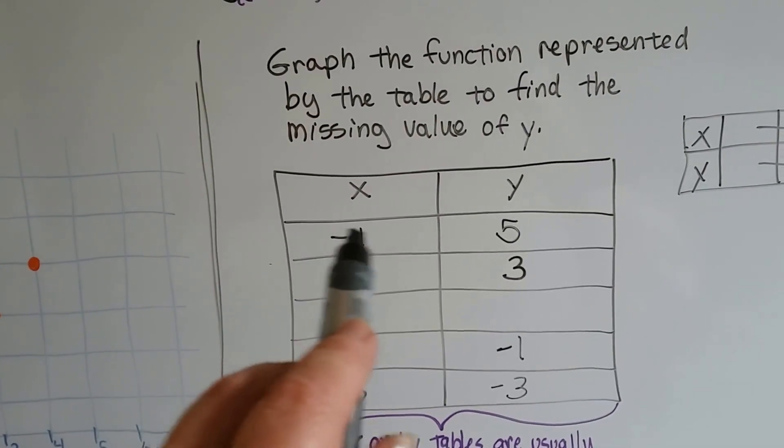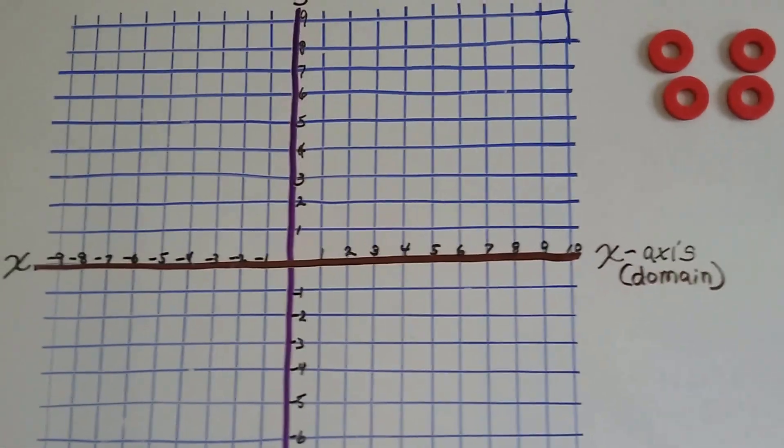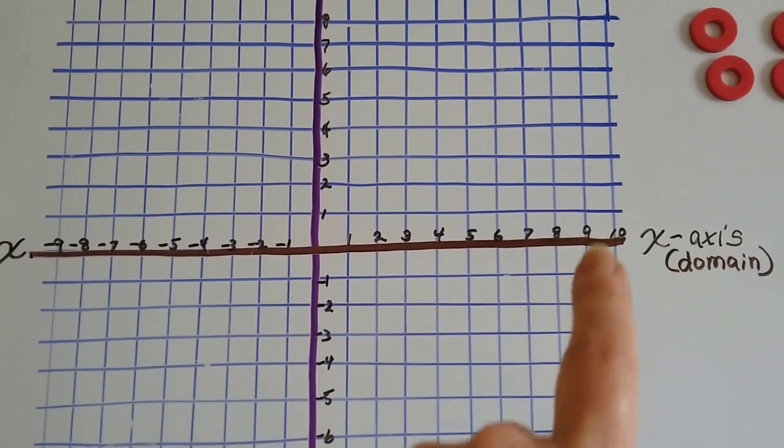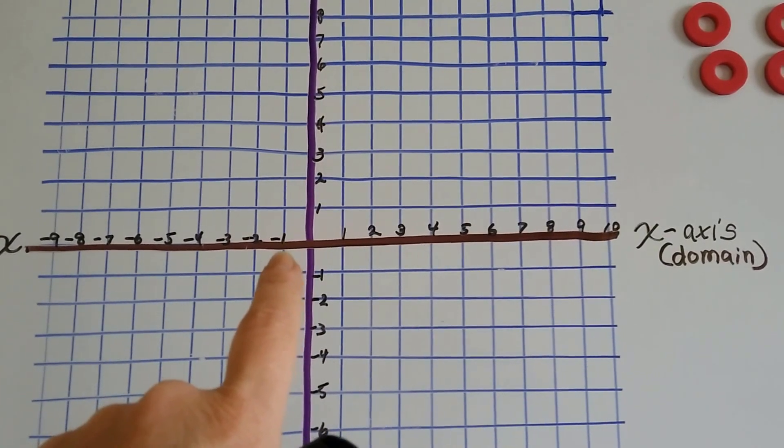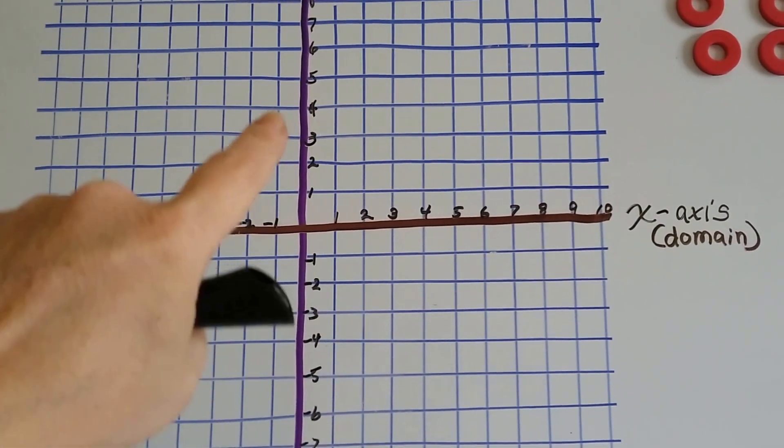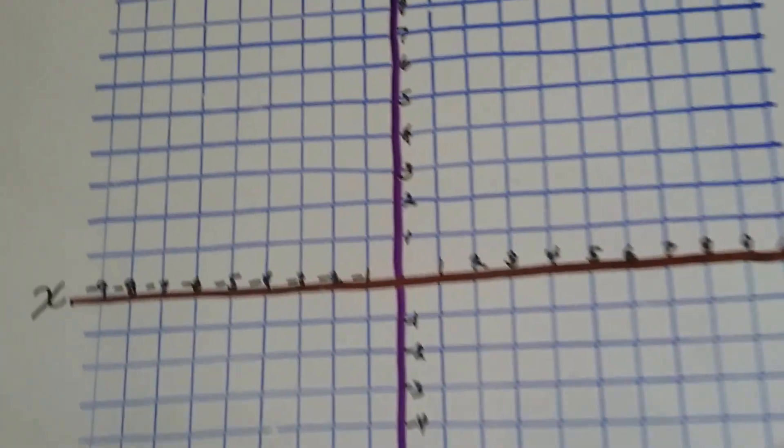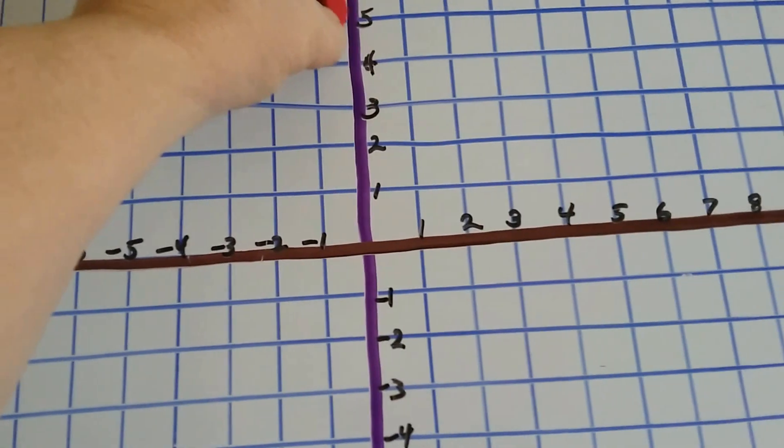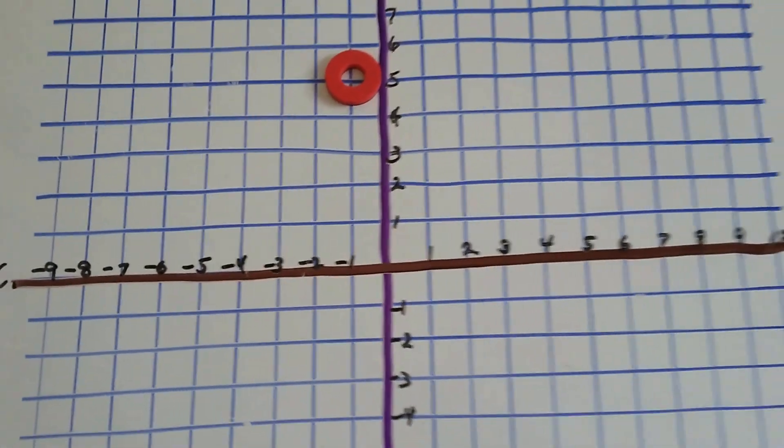So let's graph negative 1, 5. Where would negative 1, 5 be? Well, negative 1, because we do the x first, is right here, and we have a positive 5. So that's going to put us right here. So let's put a ring there. We're at negative 1, 5.